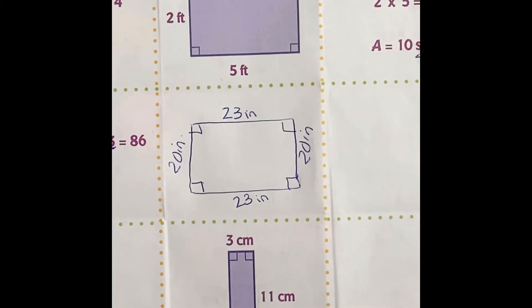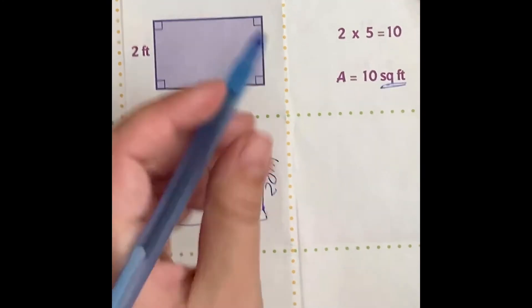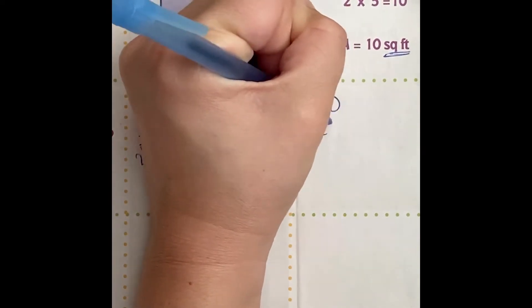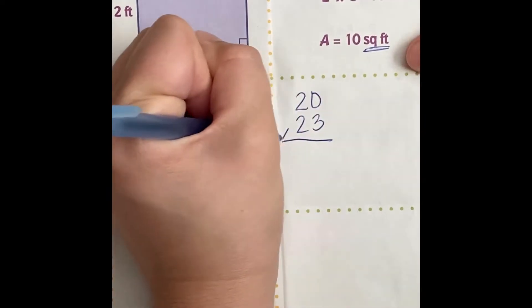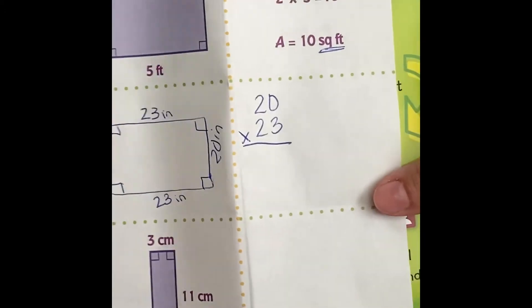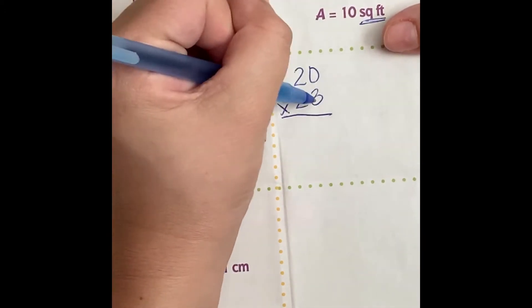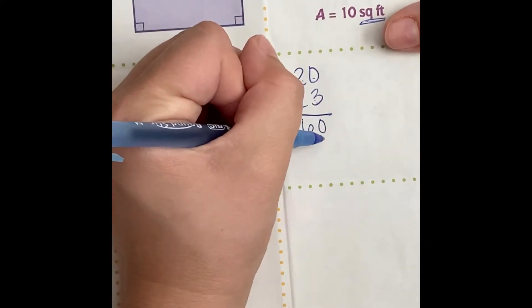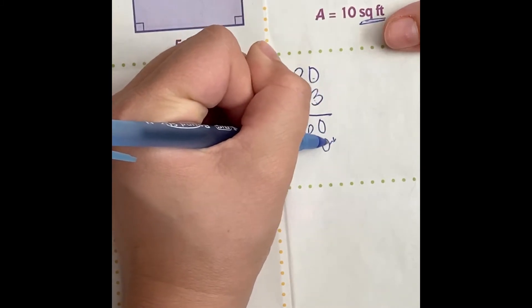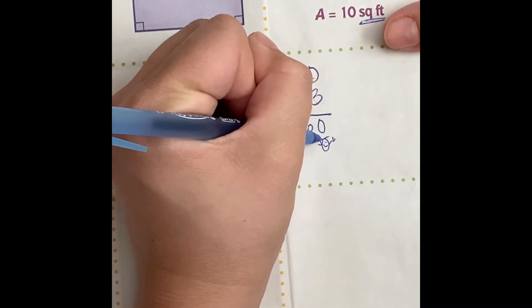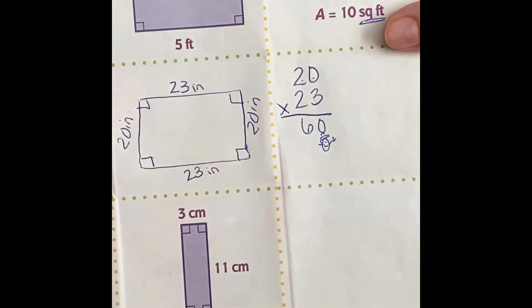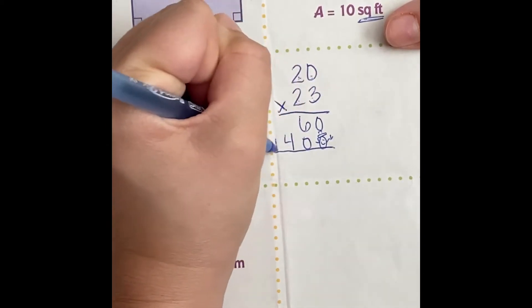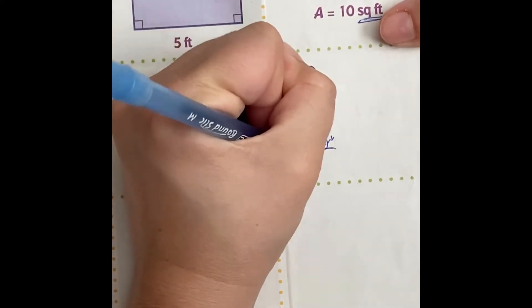So now I have to find the area. So how do I find the area? Length times width. So I'm going to do 20 times 23. This is why you have to know double digit multiplication, it always comes back. 3 times 0 is 0, 3 times 2 is 6. Here comes little zero, your zero friend. And then we have 2 times 0 is 0, and 2 times 2 is 4. And now when I add it all together I get 460.